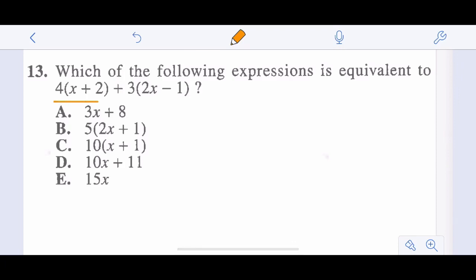Which of the following expressions is equal to 4 times x plus 2 plus 3 times 2x minus 1. So let's just distribute. 4 times x is 4x, and 2 times 4 is going to be 8. And then 3 times 2x is going to be 6x. And then 3 times negative 1 will be negative 3. So let's combine our like terms. We get 10x plus 5. We don't see 10x plus 5 here, so we're going to see how else could we represent this. If we did this one, expand it, distribute it, we get 10x plus 5. So our answer is B.